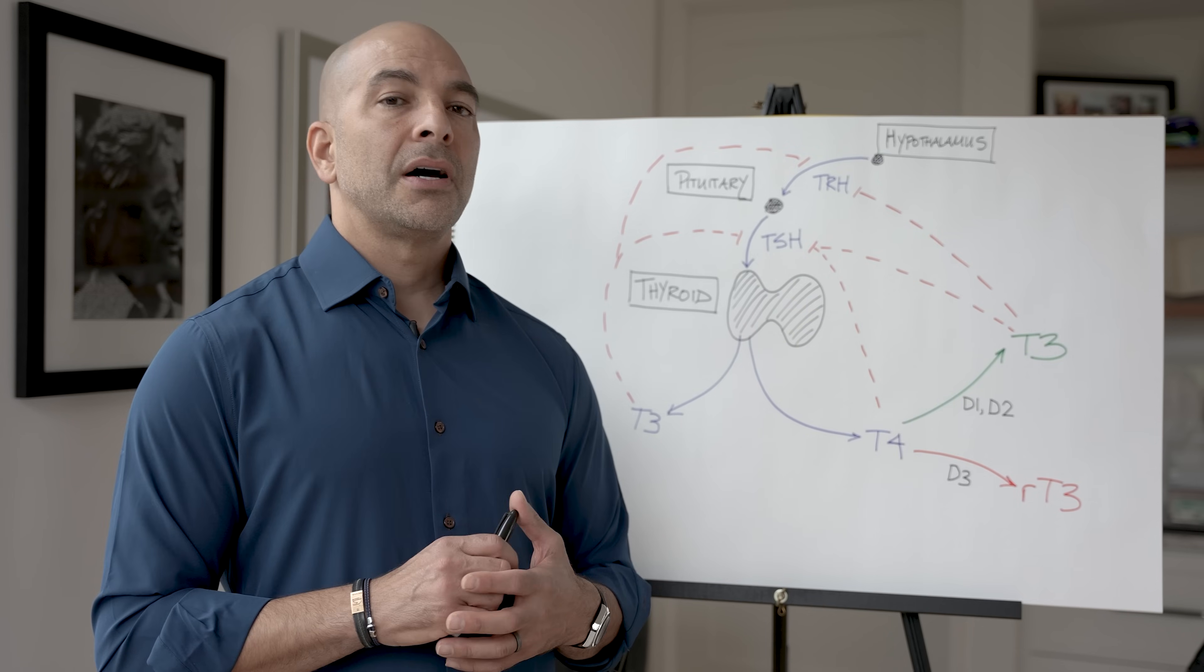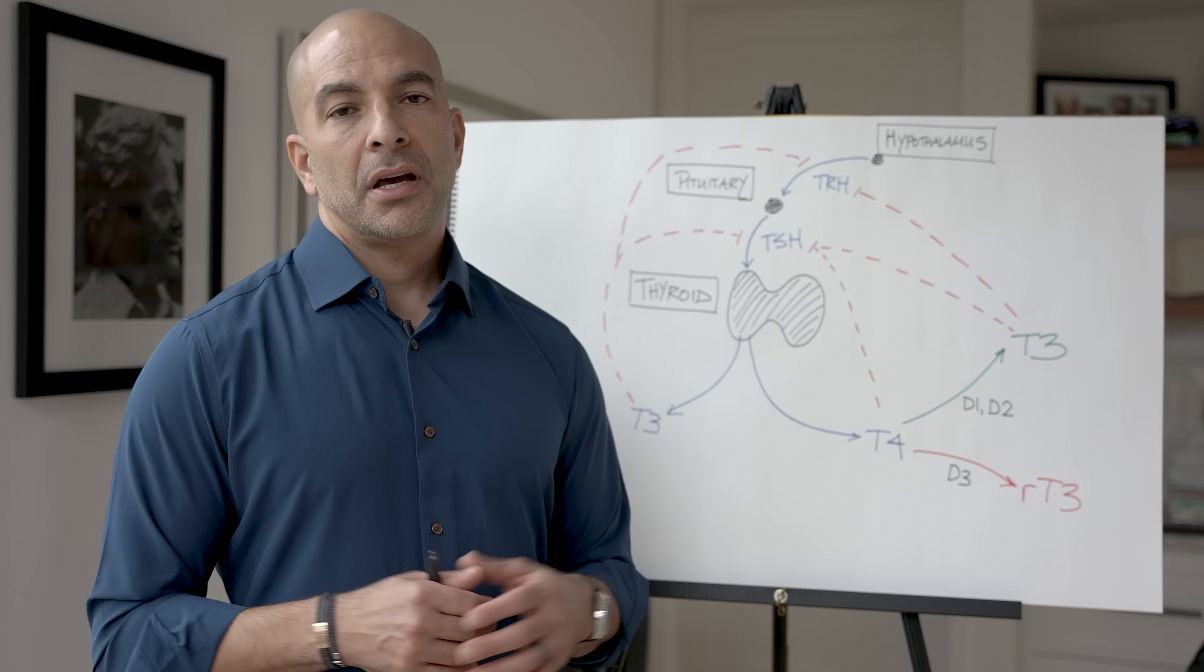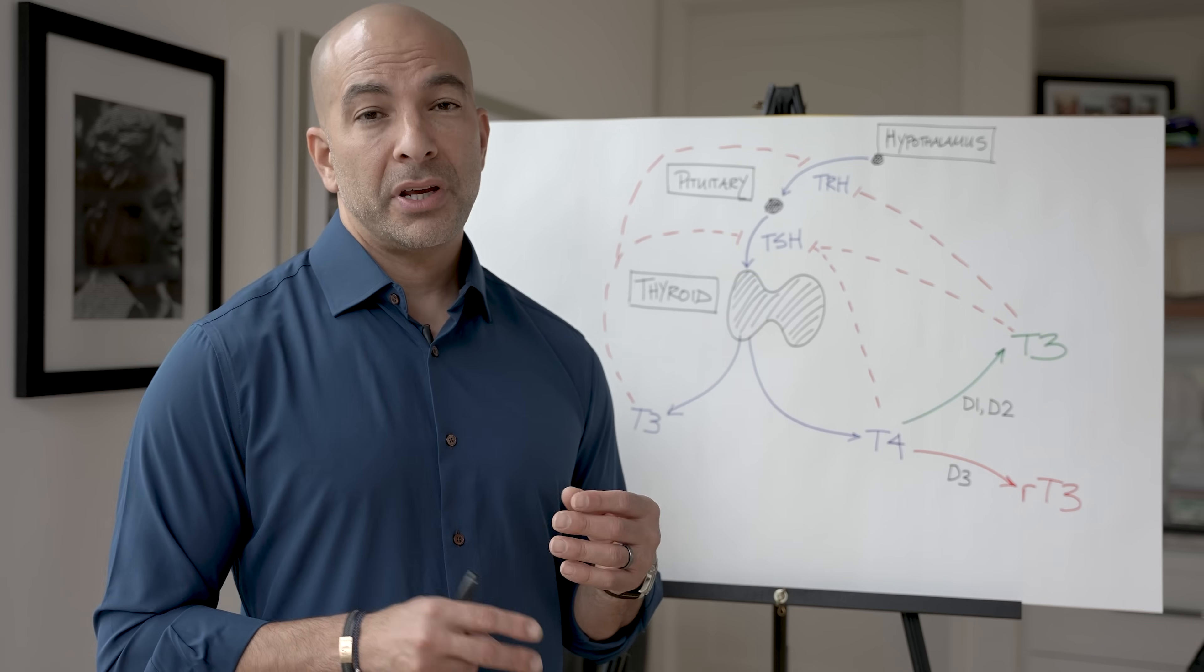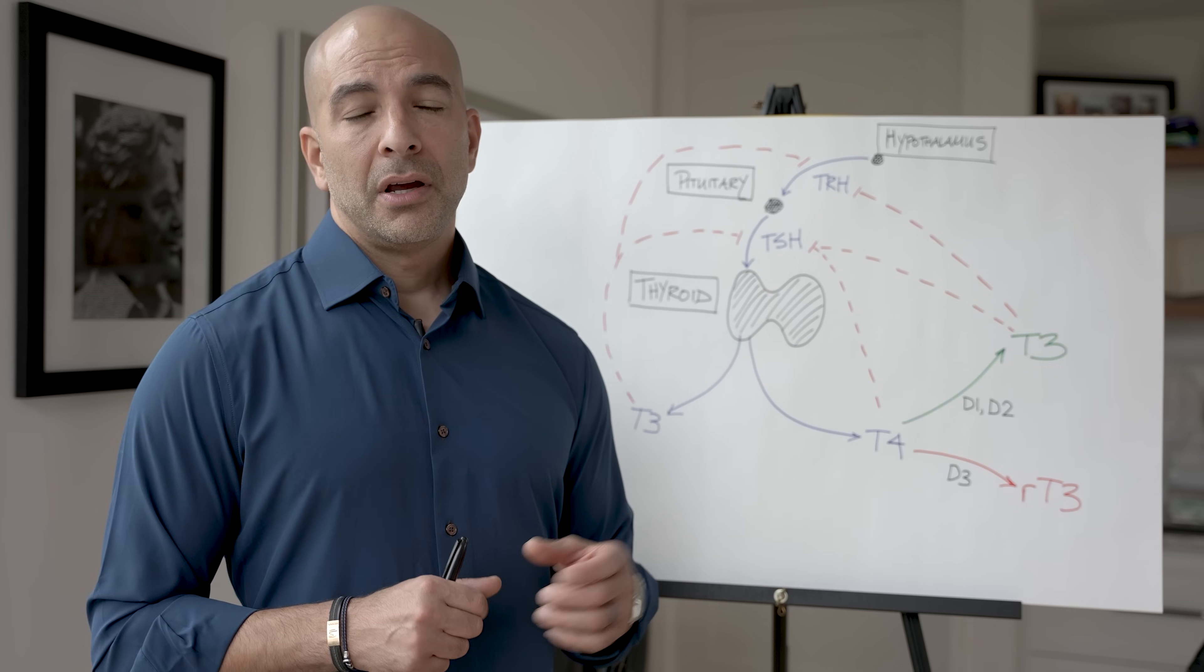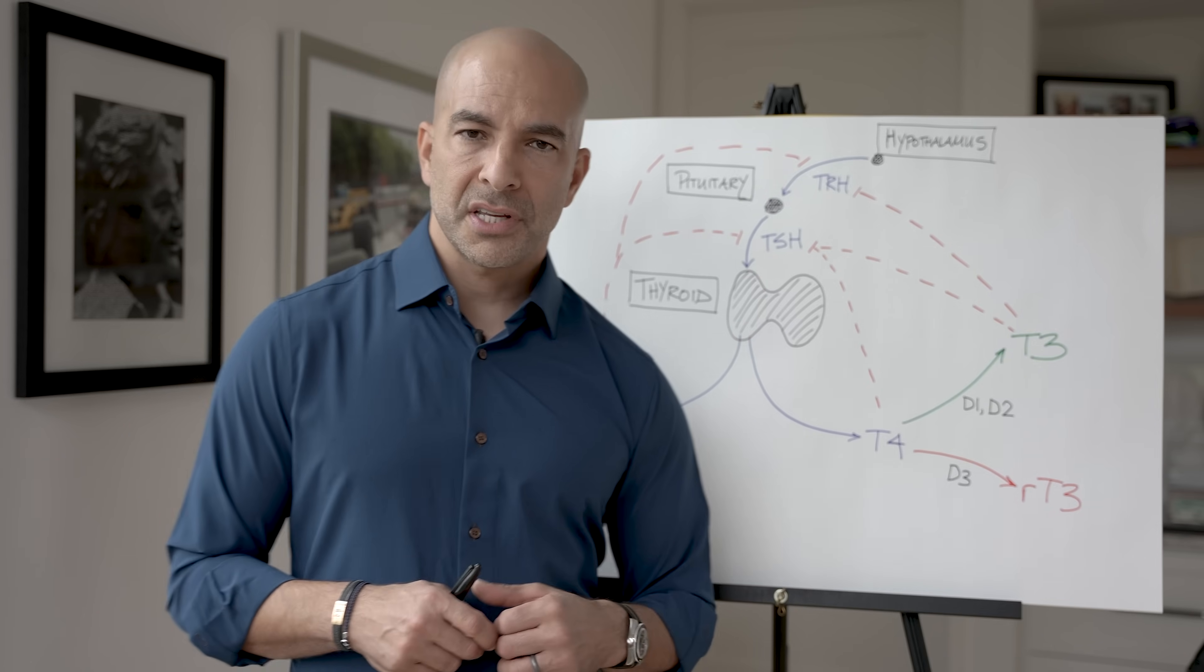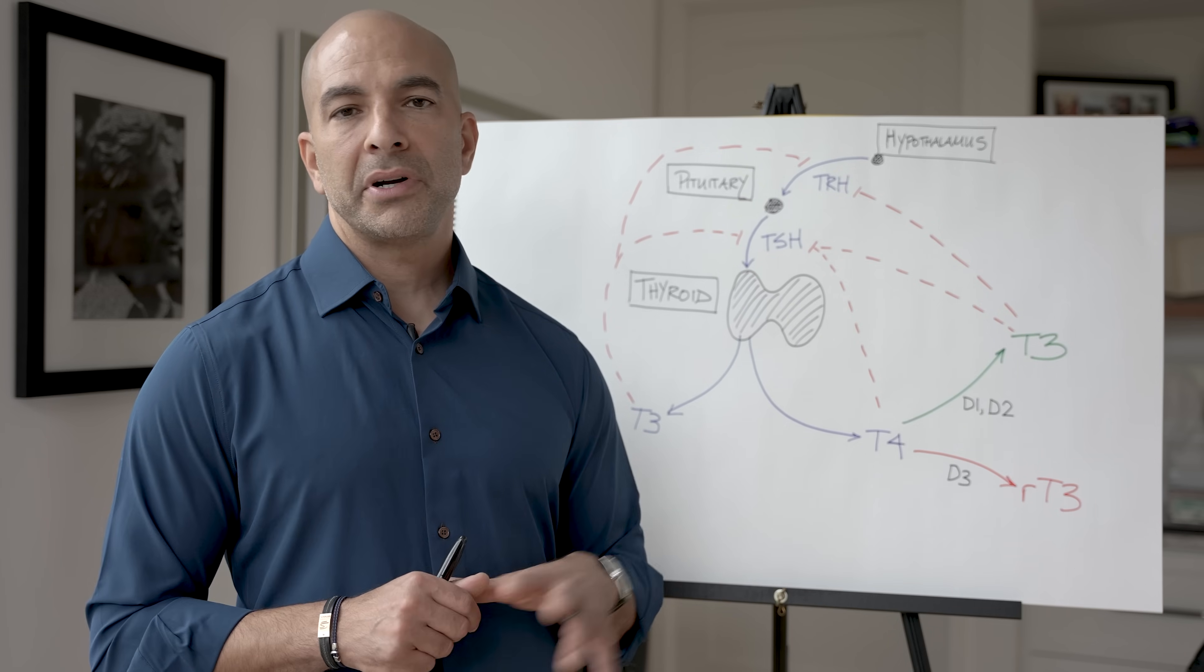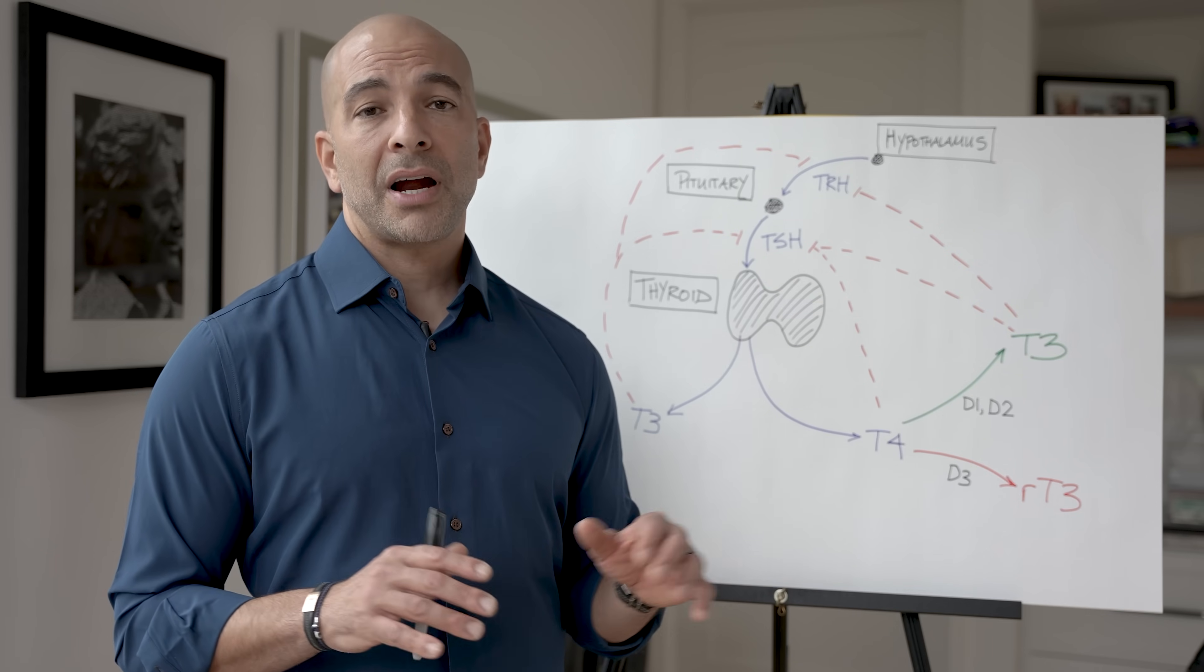There's another way that patients often receive T3, and that's in combination with T4 vis-a-vis a formulation known as desiccated thyroid. Now, desiccated thyroid is basically whole thyroid gland, and therefore it contains T4, T3, and even some T2, but we're not going to talk about that. So the two most common versions of desiccated thyroid are a formulation called naturethroid and armor thyroid. So if you're watching this video and you're interested in this topic, you've undoubtedly heard of these things. Now, I'm not going to get into the religious debates about this stuff. There are really competing schools of thought, and there are some people that believe that the only thing that should ever be given to any patient with hypothyroidism is a desiccated formulation.